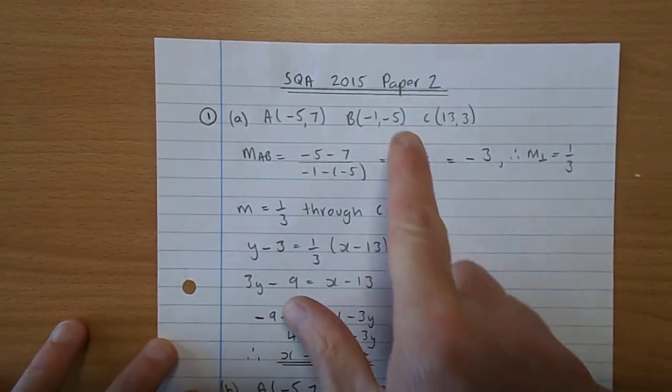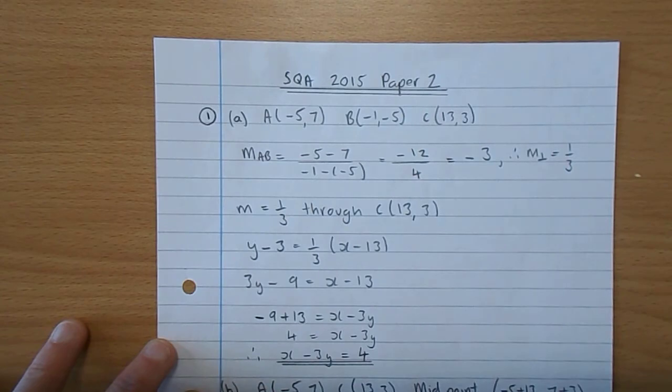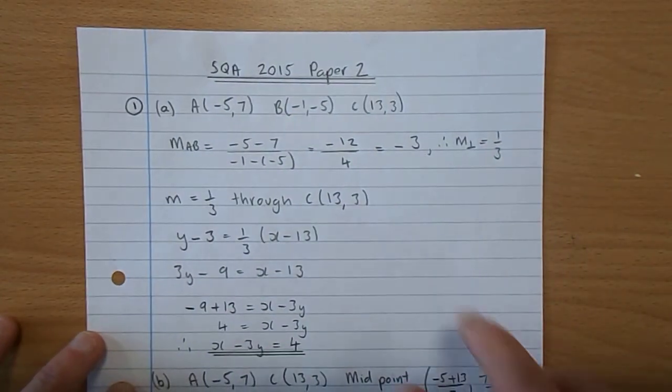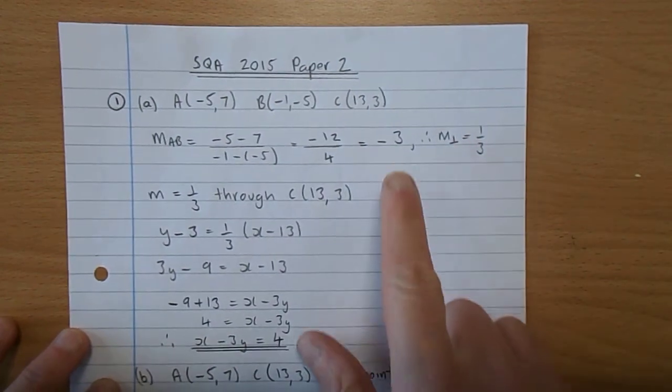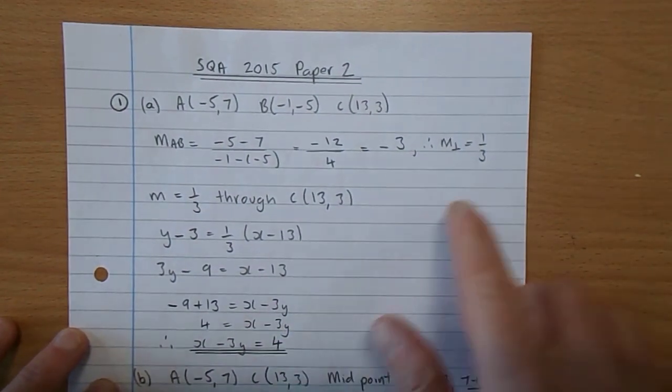Okay, the gradient from A to B is minus 5 take 7 over minus 1 take minus 5. Minus 5 take 7 is minus 12, minus 1 plus 5 is 4, that gives you minus 3. Therefore, the gradient of the perpendicular is a third.